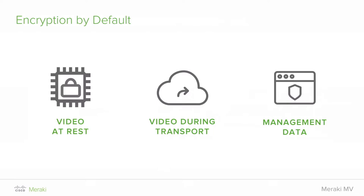The first time a camera comes online, it automatically and silently purchases and provisions its own publicly signed SSL certificate. So we no longer have to deal with manual purchasing, provisioning, or self-signed certs. This is all done seamlessly in the background. All Meraki management data across all of our products is also encrypted, so you have this end-to-end encryption model. And not only this — all of this encryption is on by default. You actually cannot turn it off, so we don't allow you to be less secure.